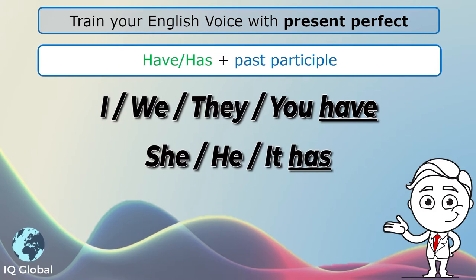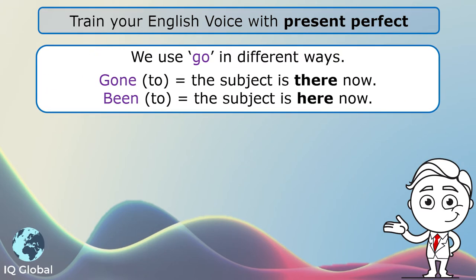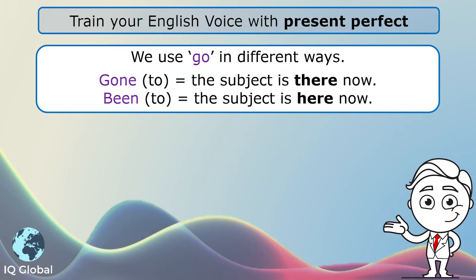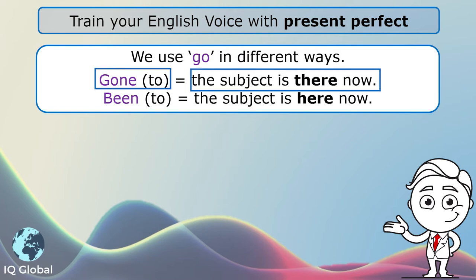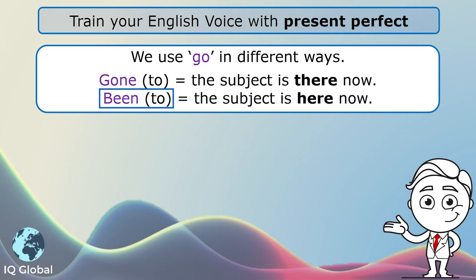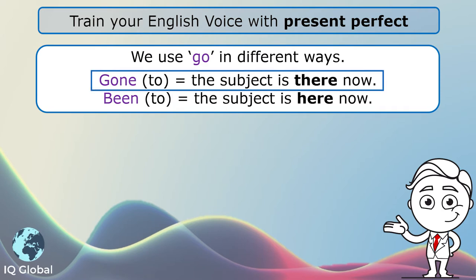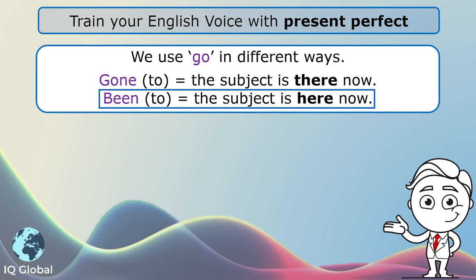We use has when we talk about she, he, or it. Now have a look at how we can use go in different ways. We can use it in the past tense as gone when the subject is there. We use been as the past tense of go when the subject is here. So: gone — the subject is there; been — the subject is here.